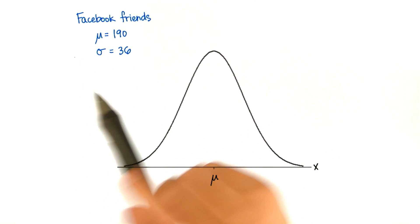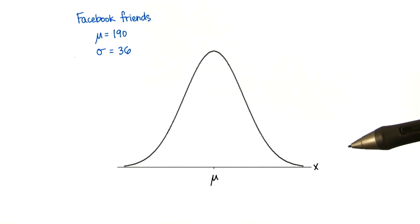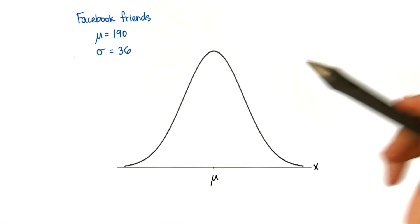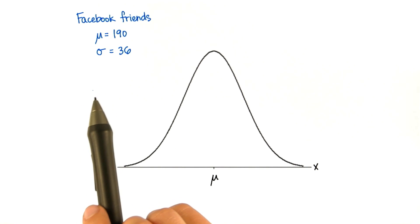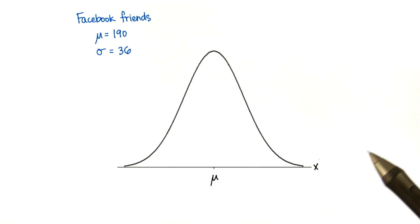So using this information, click the link we share and tell us how many Facebook friends you have, then calculate your z-score. Later, we're going to analyze that data and see if we get a normal distribution. We'll be able to tell if some z-score values don't match up.